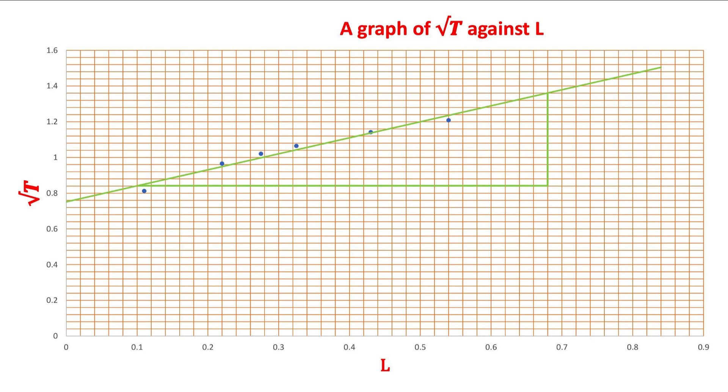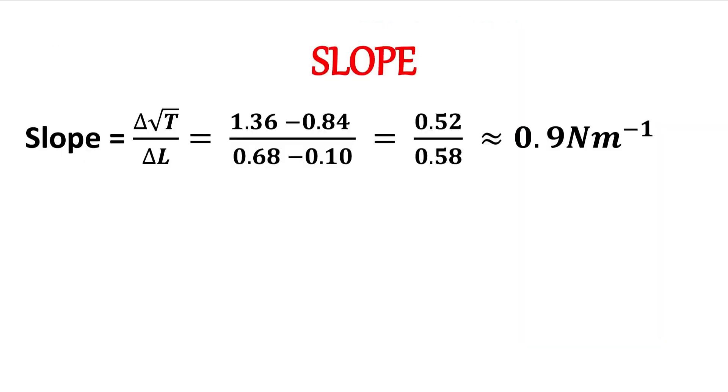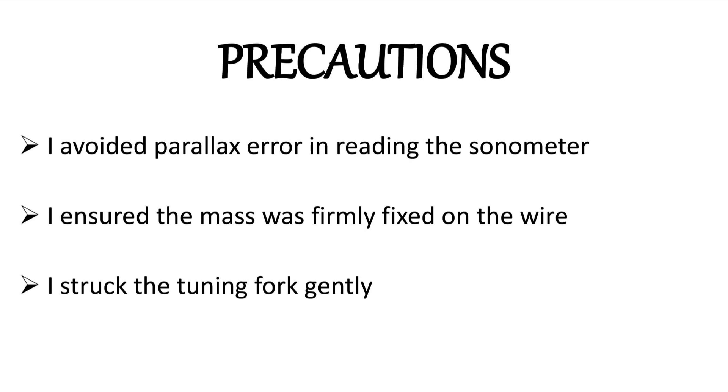Once that is done, we can deduce our slope by finding the change in the square root of T against the square root of L, and our answer is approximately 0.9 newton per meter. It is newton per meters because when we were measuring the length, we converted to meters. The scale given to us is in meters, so we use meters, but if in your exam they give you in centimeters, you're free to use centimeters.